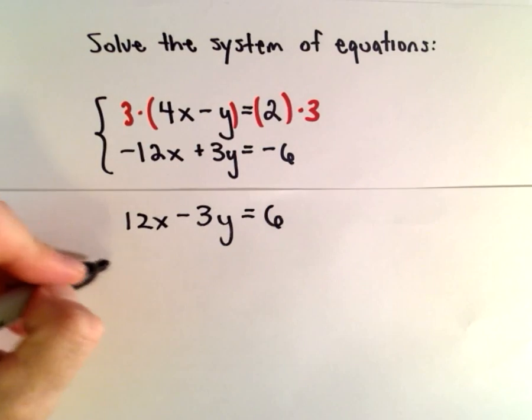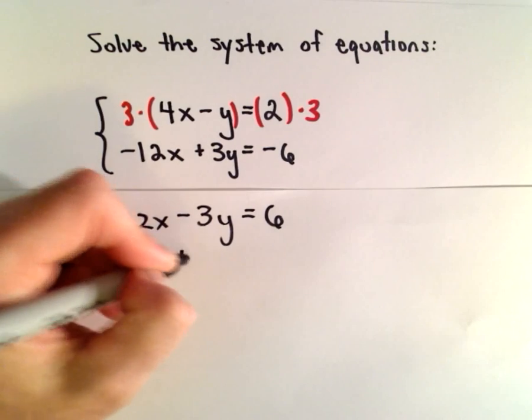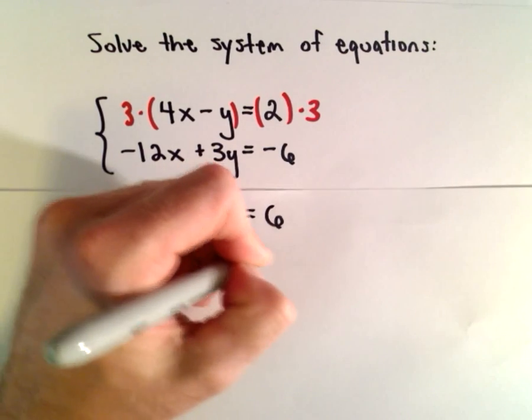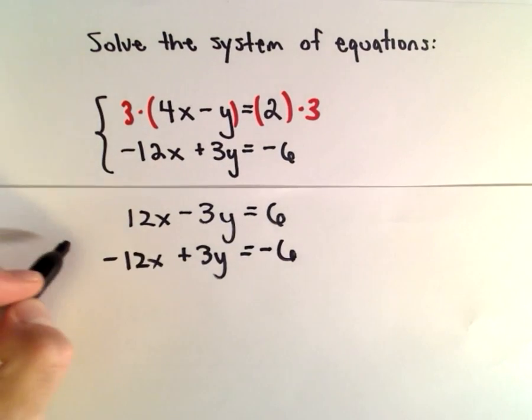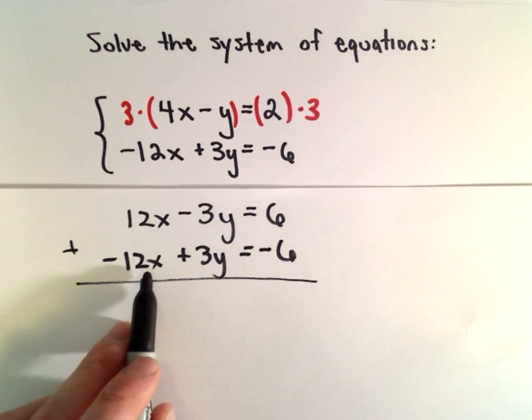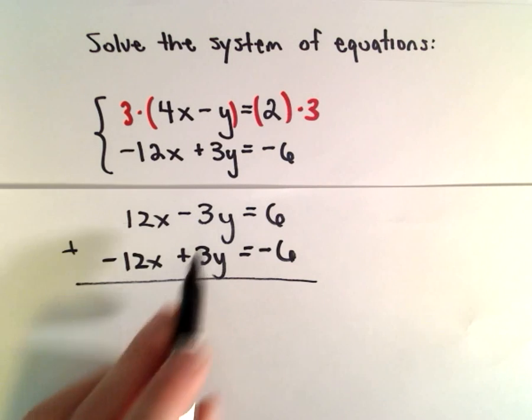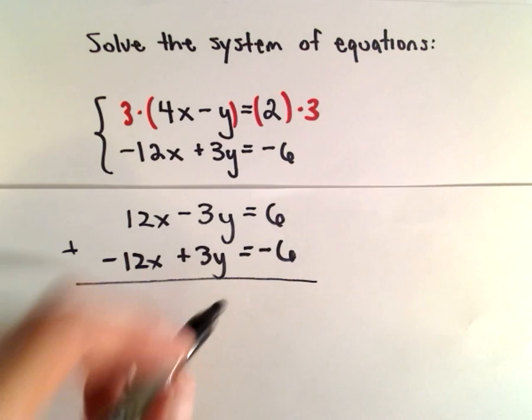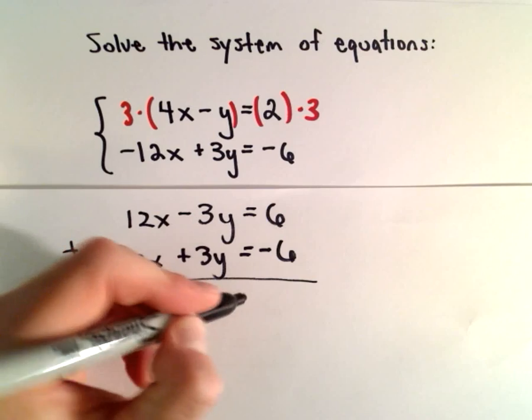And then we have negative 12x plus 3y equals negative 6, just our original second equation. Notice if I add these two equations I'll get 12x minus 12x, I'll get 0x. Negative 3y plus 3y is 0y, so we're left with 0 on the left side.